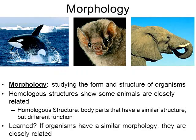We've learned that if organisms have a similar structure, a similar form, a similar morphology, then they're closely related. When you look at pictures of whales, bats, and elephants, you may not think they have very much in common. But when you examine their morphology, you can actually see that these three animals have a lot in common with one another.